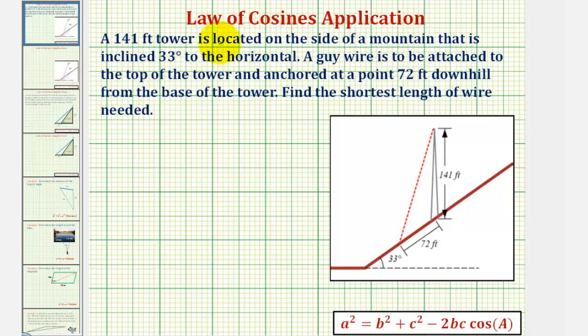A 141 foot tower is located on the side of a mountain that is inclined 33 degrees to the horizontal. So looking at the diagram below, here's the tower that is 141 feet tall. And because the mountain is inclined 33 degrees to the horizontal, this angle here measures 33 degrees.